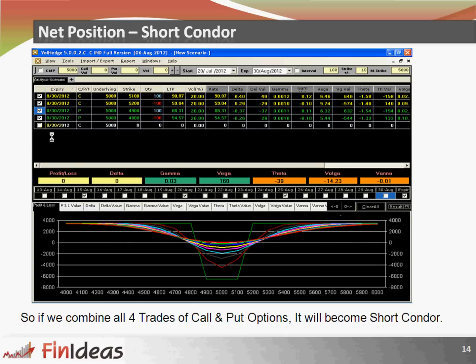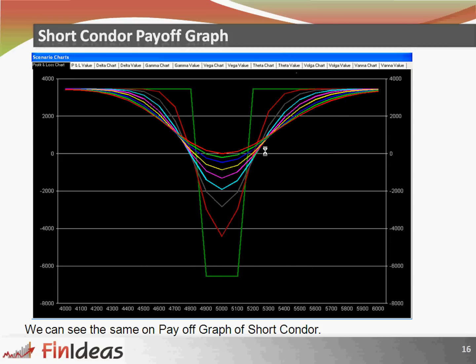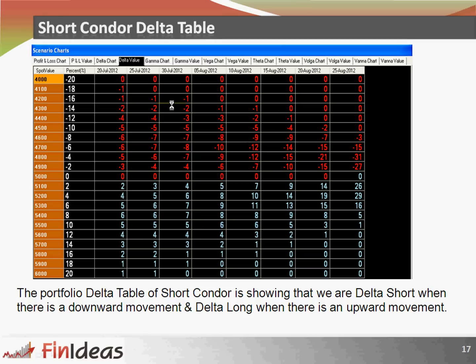Net position for short condor: if we combine all four trades for call and put options it will become a short condor. The short condor payoff table shows that we will have limited loss if the market remains in the range, that is the condor range, and either side movement will have a limited profit. Our condor range is 4800 to 5200. We are having limited losses on every level within that range, and any movement upside or downside above or below the condor range gives us limited profit.